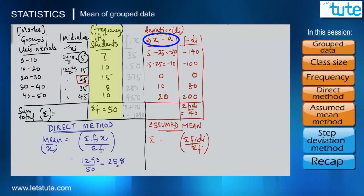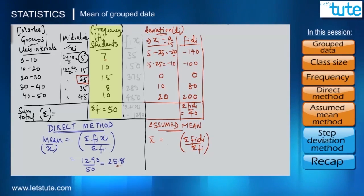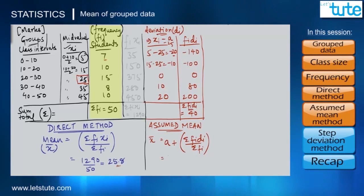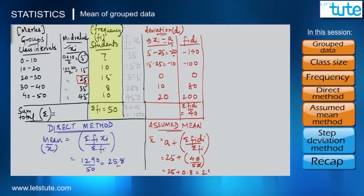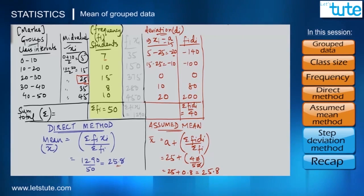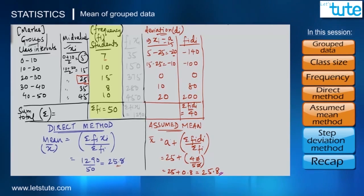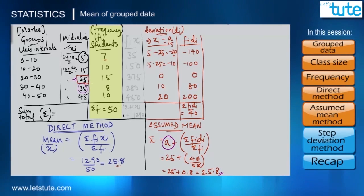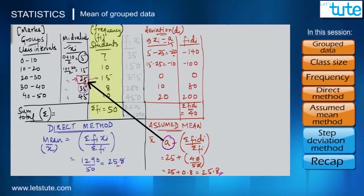We then calculate Σfi·di divided by Σfi. The only difference in this formula is that we subtracted every mid value by a factor of 25, so at the end we add back that assumed mean 'a' to balance things out. This again gives us 25.8 — the same answer. The key difference maker is 'a', and mostly we choose the observation with the highest frequency as the assumed mean.